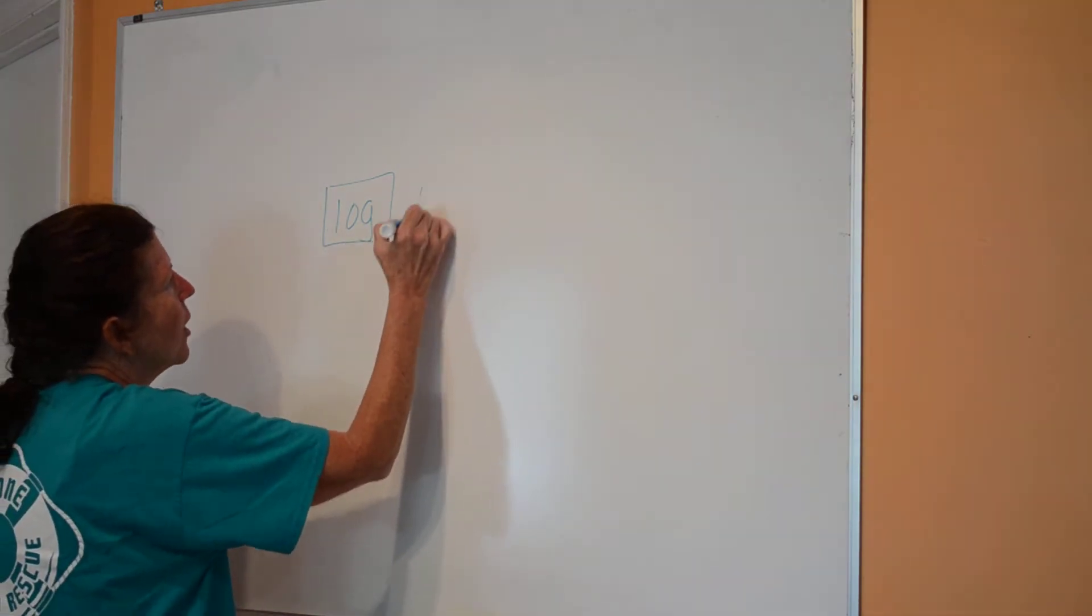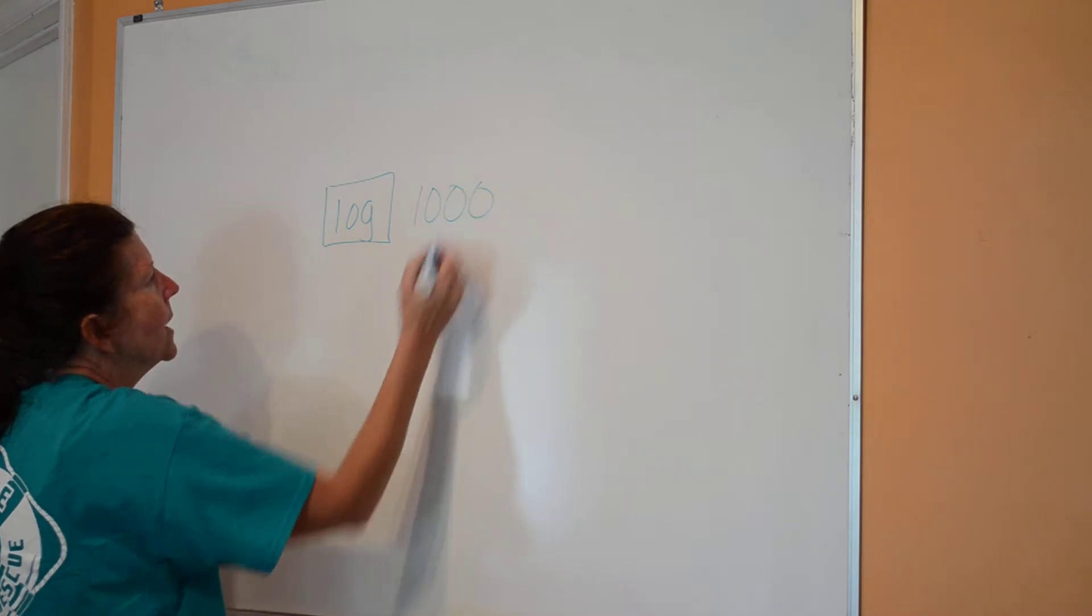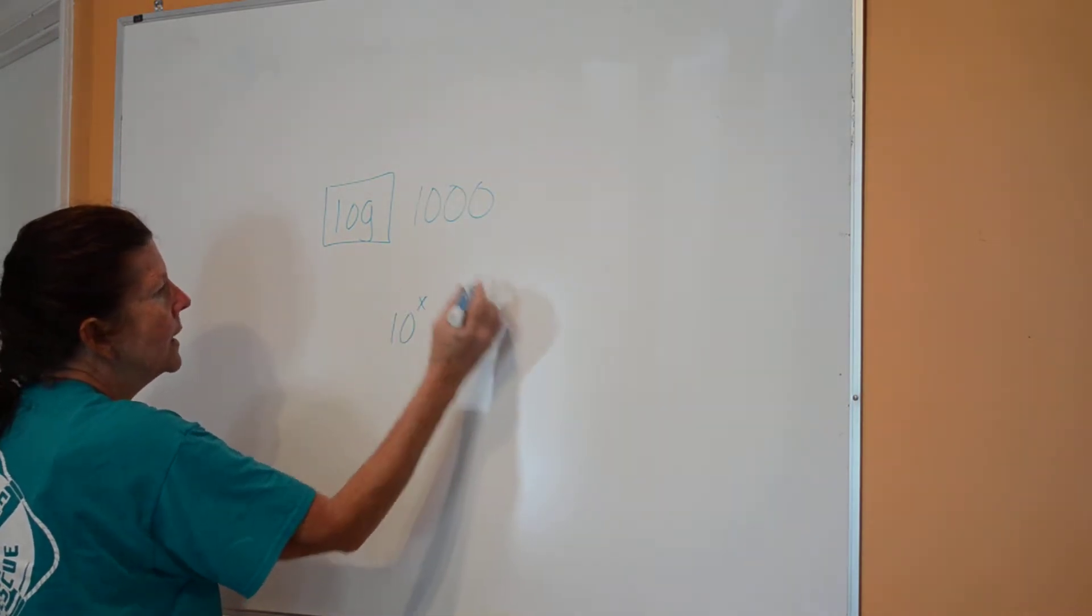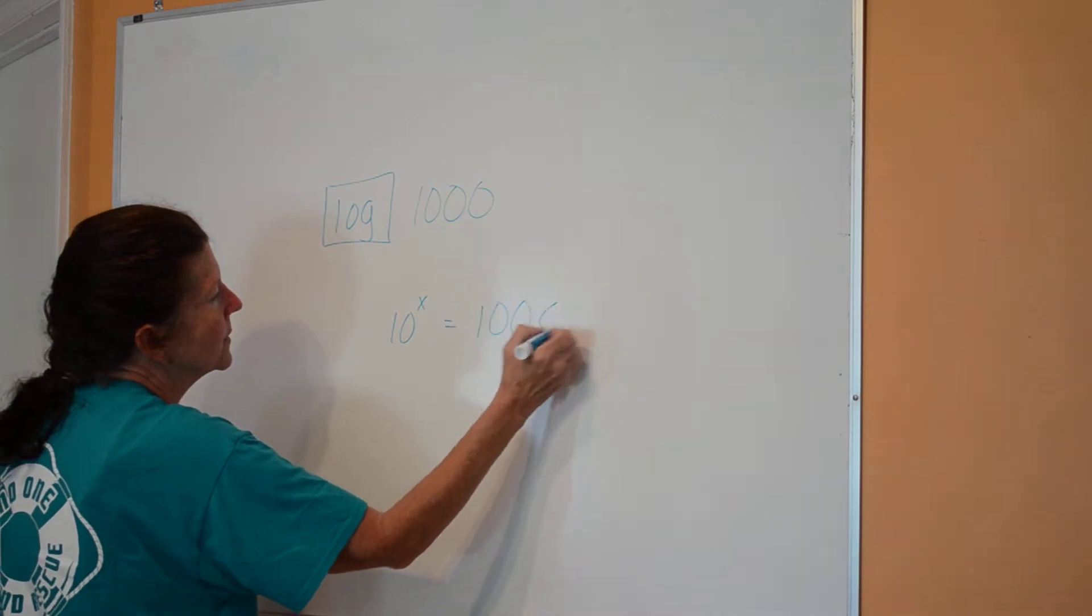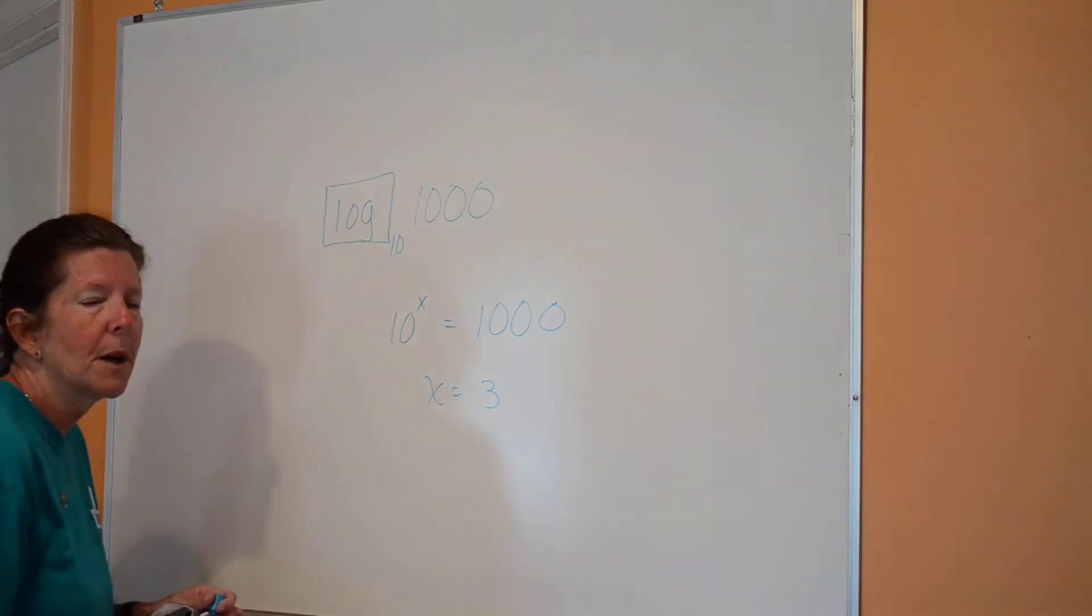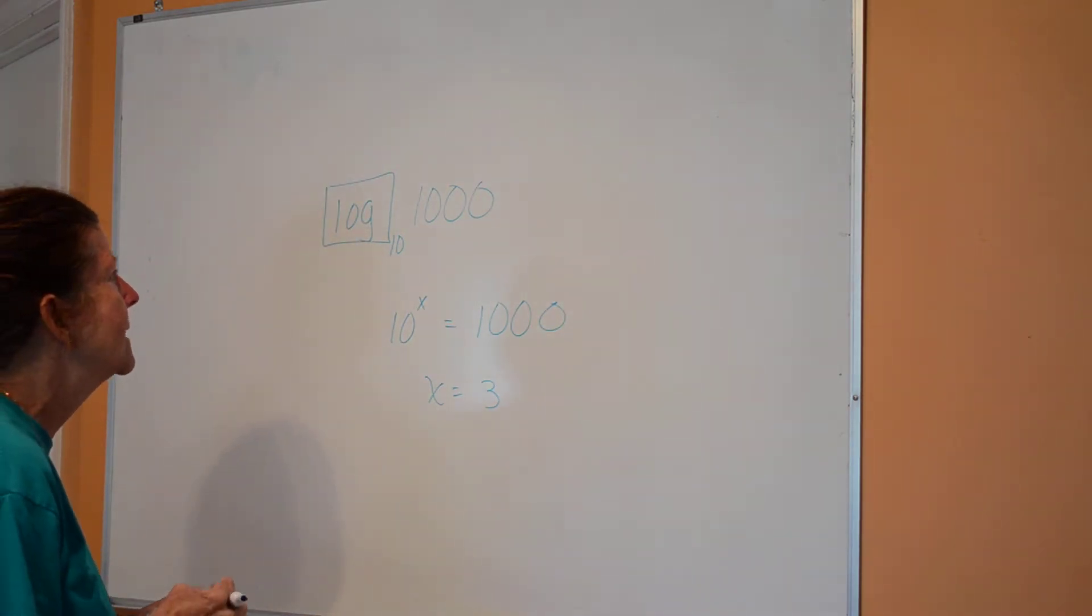So if I said the log of a thousand, that means 10 to the what power is equal to a thousand. So x would equal 3 because there's an understood base 10 when you press the log button on your calculator.